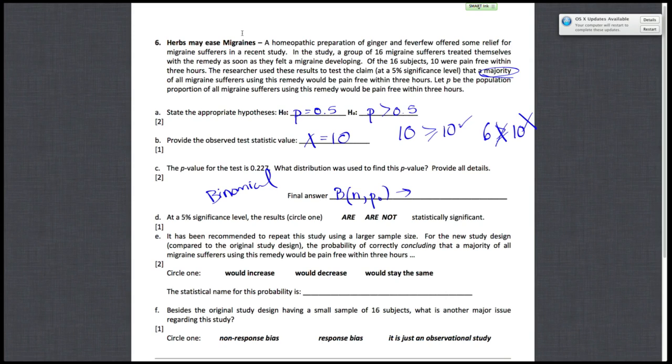So in this case, our n is 16, and our p-naught is 0.5, the null proportion.